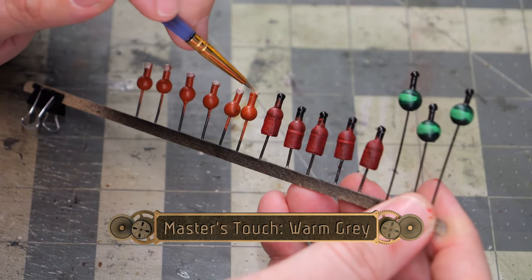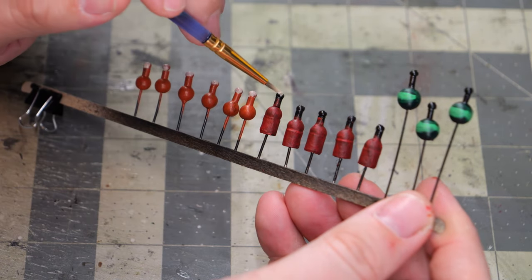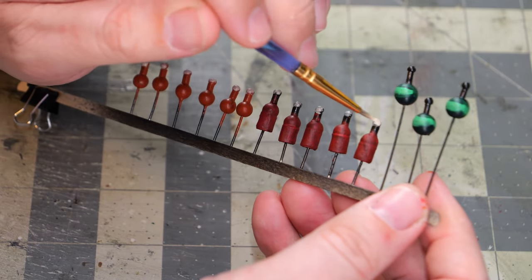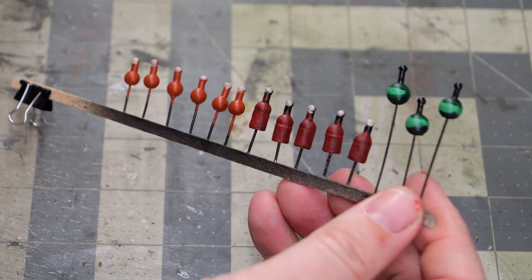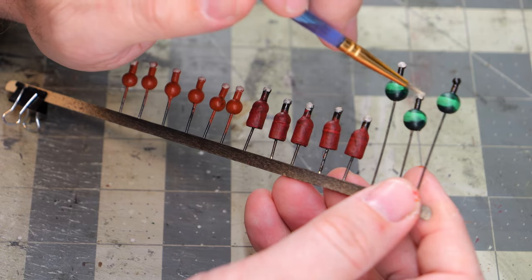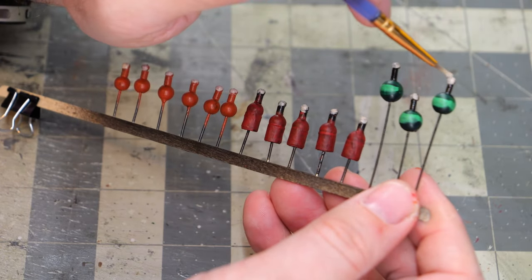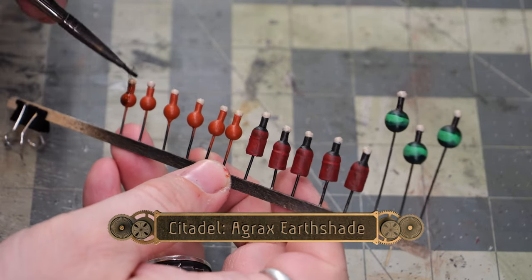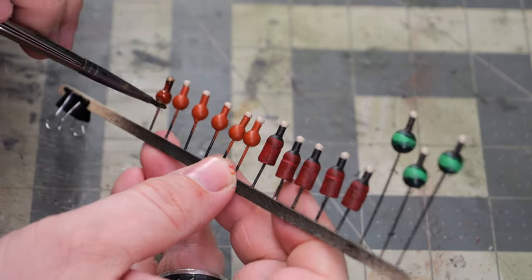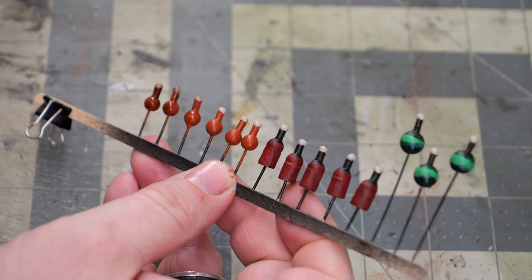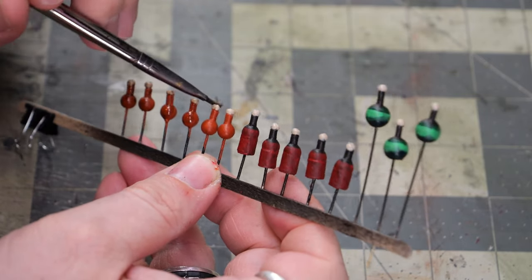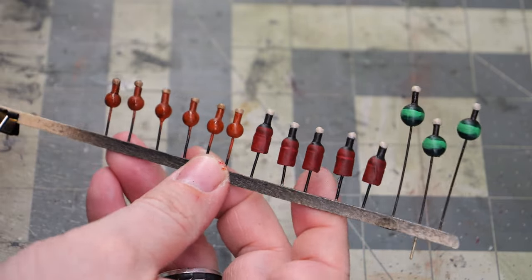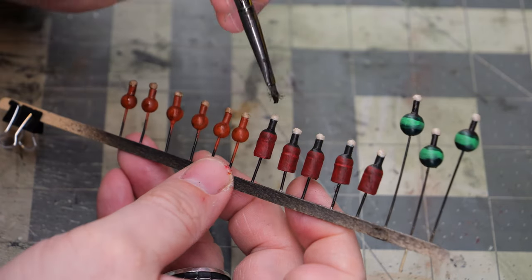Once that's all dry, we're going to use some warm gray to paint the cork section of all the bottles. And then, once that's dried, we're going to use some Agrax Earthshade. I'm going to paint over the entire bottle for the small ale bottles, but just the corks on the rest of them. This will give the burnt sienna a more clay-like appearance, and it'll help make the warm gray for the corks look a little more cork-like.